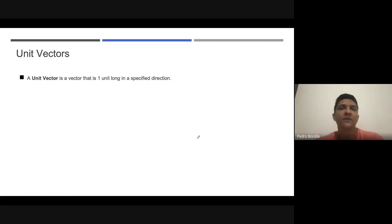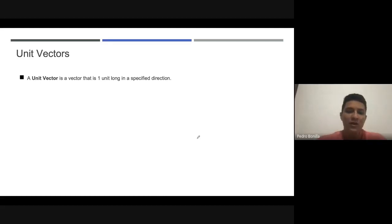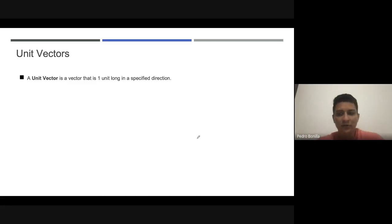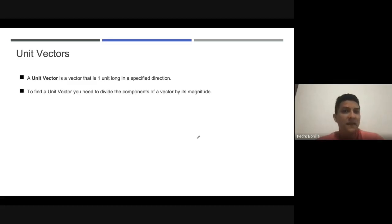The unit vector is essentially a procedure. Through this procedure, what we are doing is taking out the magnitude of any vector and keeping just the direction. To find the unit vector, the procedure is as follows: we are going to find the magnitude of the reference vector.